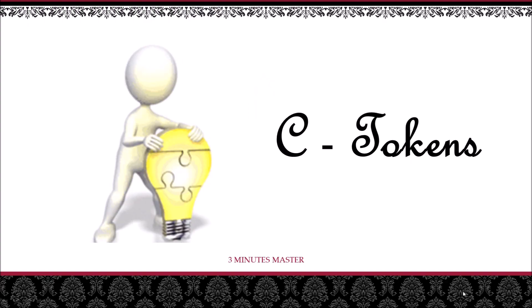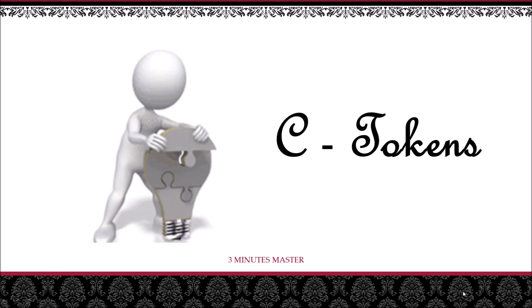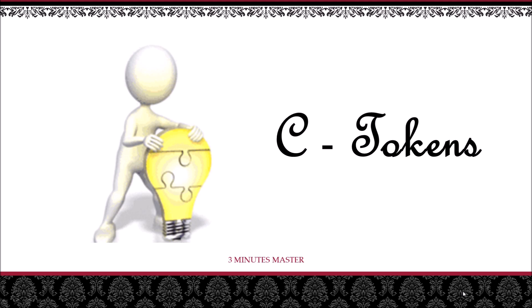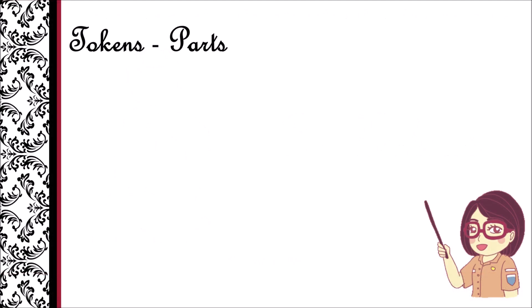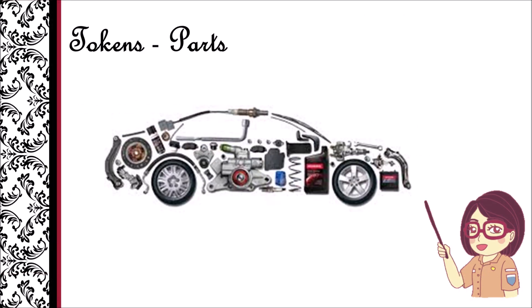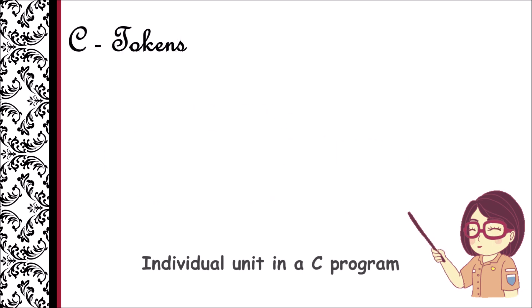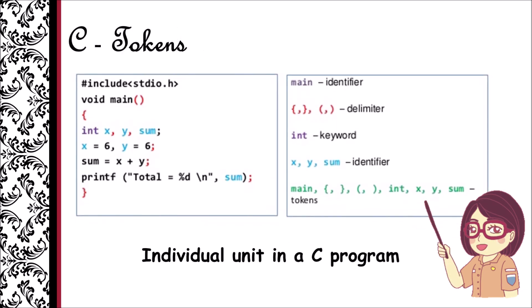Hello guys, welcome to our channel Three Minutes Master, where you can learn any concept in three minutes. In this video I want to give you a basic idea regarding C tokens. Just like a car is a collection of individual parts, a program can also be seen as a collection of individual units. Those individual units are called C tokens.